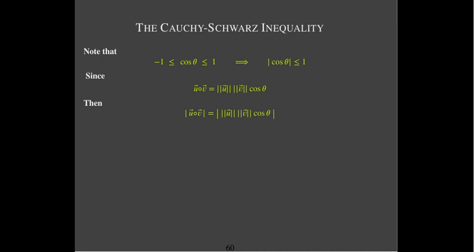We'll go ahead and take the absolute value of both sides because we know that u dotted with v could be negative. As a property of the absolute value, I can go ahead and factor out the length of u and the length of v from the right-hand side. That gives me that the absolute value of u dotted with v is the length of u times the length of v times the absolute value of cosine theta.